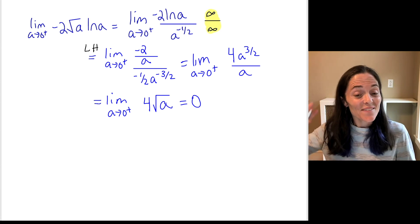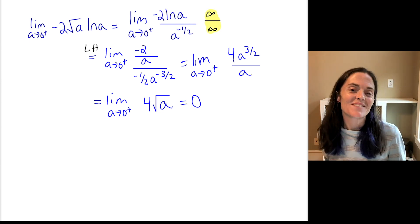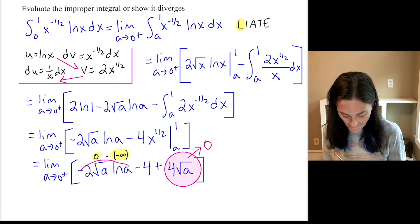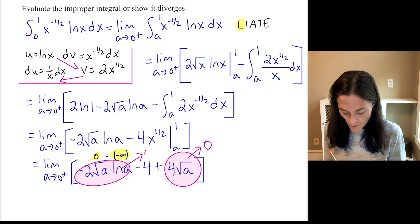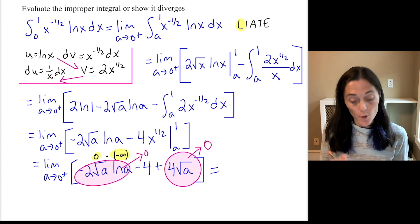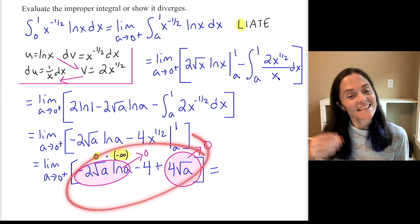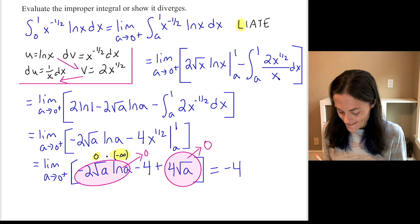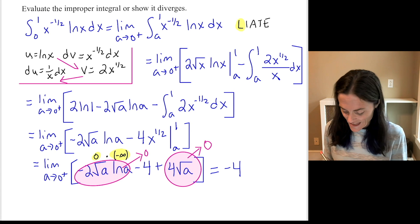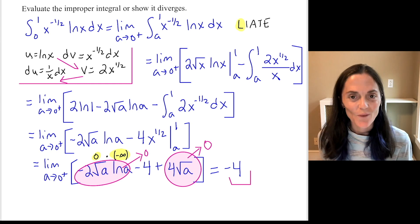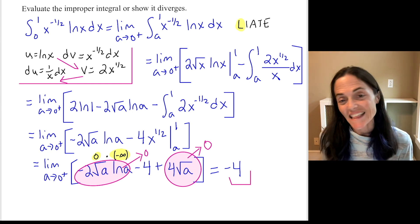So, we have this final limit that we needed for this improper integral. We just calculated here, this limit. 0. And so, altogether, we have the limit as a approaches 0 of this entire thing is 0 minus 4 plus 0, which is negative 4. This is a convergent improper integral and its value is negative 4. Thank you so much.